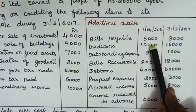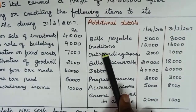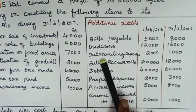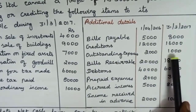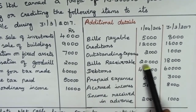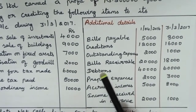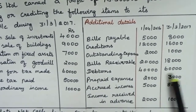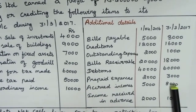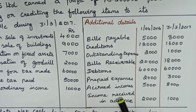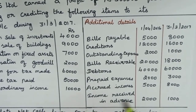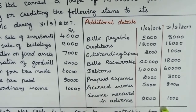Bills payable 5,000 and 8,000; creditors 12,000 and 16,000; outstanding expenses 2,000 and 1,000; bills receivable 20,000 and 18,000; debtors 40,000 and 60,000; prepaid expenses 2,000 and 3,000; accrued incomes 5,000 and 8,000; income received in advance 2,000 and 1,000.